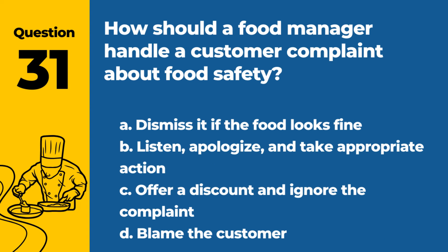Question 31. How should a food manager handle a customer complaint about food safety? a. Dismiss it if the food looks fine. b. Listen, apologize, and take appropriate action. c. Offer a discount and ignore the complaint. d. Blame the customer. Answer: b. Listen, apologize, and take appropriate action. This approach helps address the customer's concerns and maintain the establishment's reputation.